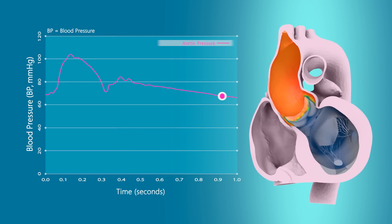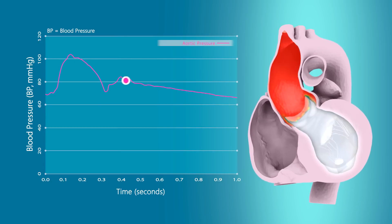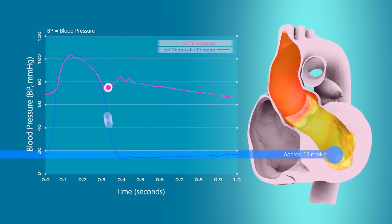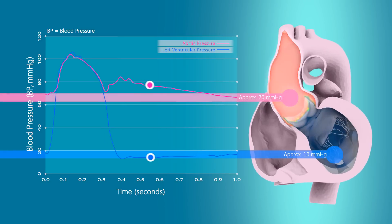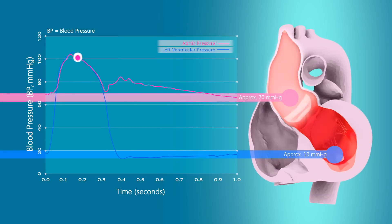When the heart relaxes, the blood pressure of the left ventricle decreases to around 10. But because the aortic valve closes, it is calculated that blood pressure of the aorta is kept around 70.